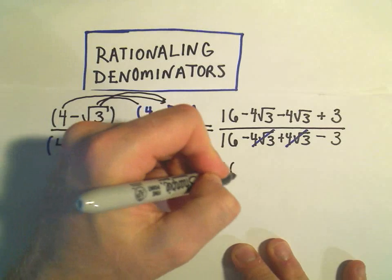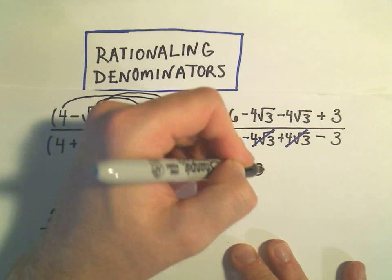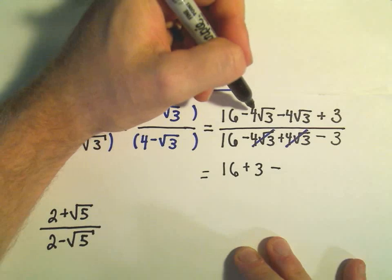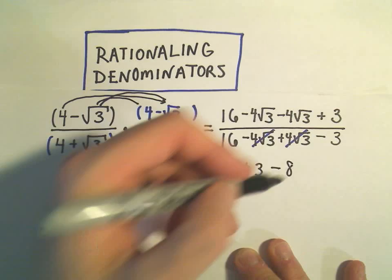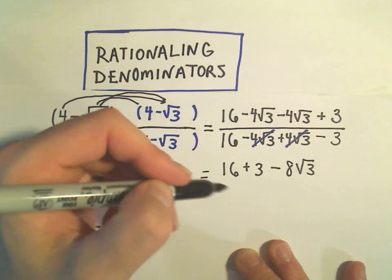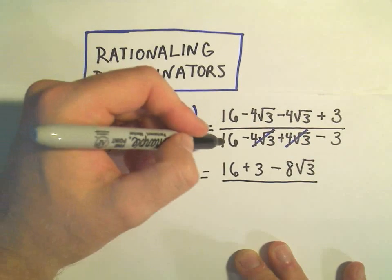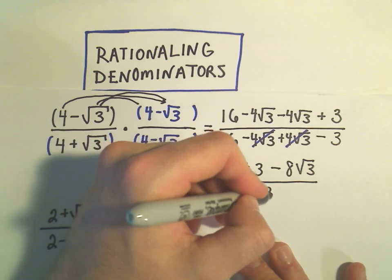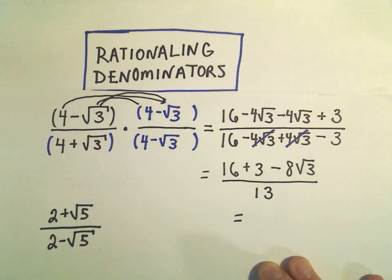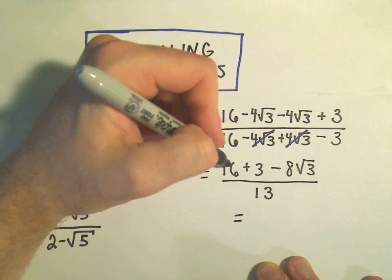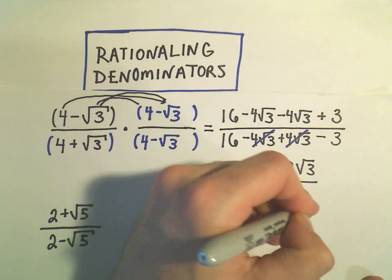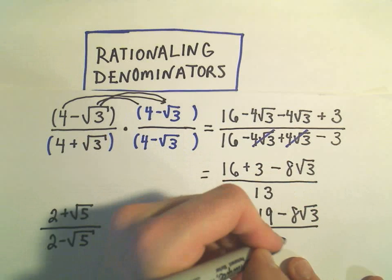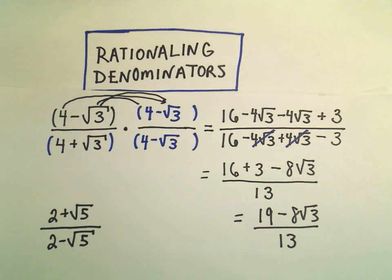Then we can simplify what's left. Notice I have a negative 4 root 3 and a negative 4 root 3 in the numerator — that'll leave us with negative 8 square roots of 3. In the denominator, I'll have 16 minus 3, which is 13. I've got 16 plus 3, which is 19, minus 8 square root of 3, all divided by 13. And that would be our final solution for this first problem.